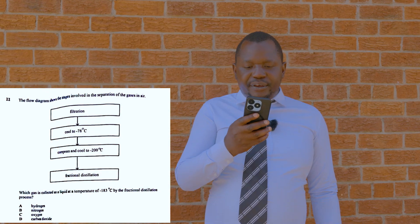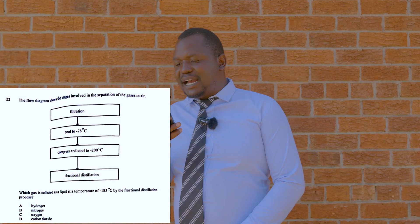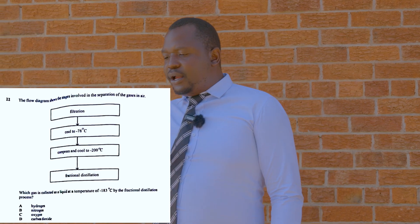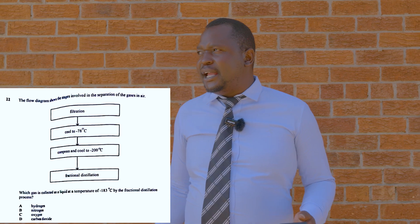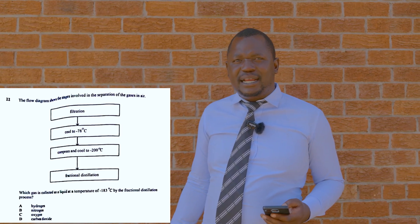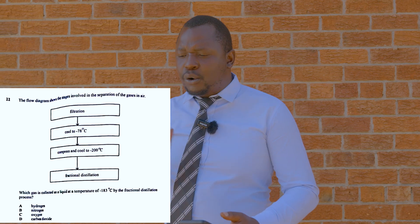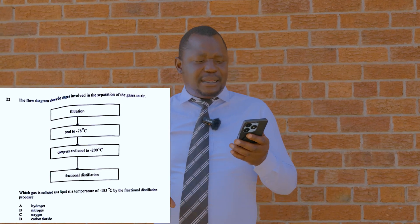Question 22: the flow diagram shows the stages involved in the separation of gases in air. In this process, liquefaction of air is used, followed by fractional distillation. The gases are compressed and cooled, then separated by fractional distillation.